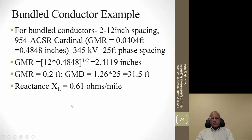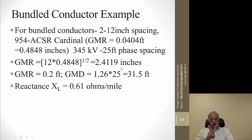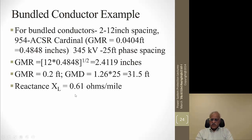For bundled conductors, the geometric mean radius of a single conductor is 0.778 times its radius — for example, 0.4848 inches — and with two bundled conductors spaced 12 inches apart, the effective GMR becomes the square root of (12 × 0.4848), approximately 2.42 inches. Bundling effectively increases the equivalent conductor radius, which reduces radio interference caused by electric field breakdown at higher voltages. The resulting reactance comes down to about 0.61 ohms per mile, compared to 0.75 for a single conductor, even with slightly larger spacing.